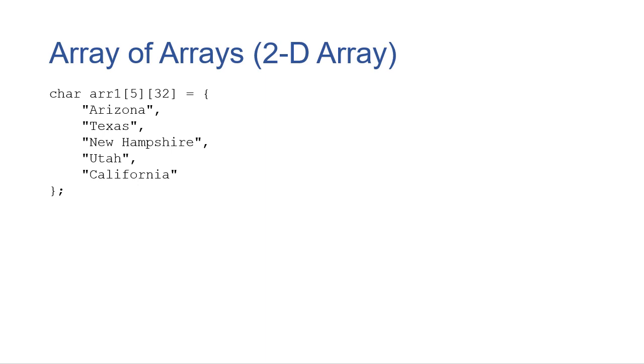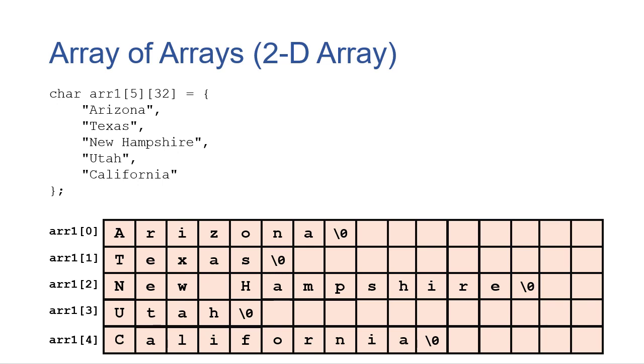So one way we could store an array of strings would be to use a two-dimensional array, an array of arrays. So here we have an array of five character arrays of length 32. And you can see we also initialized this with five different strings. So in memory, this looks something like this, where we have the five arrays, indexes 0 through 4. And then each of those holds a string.